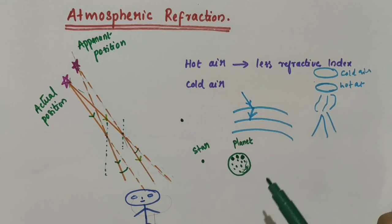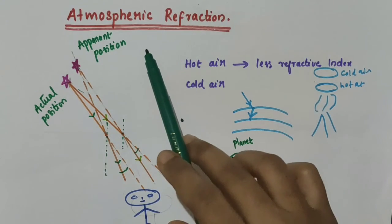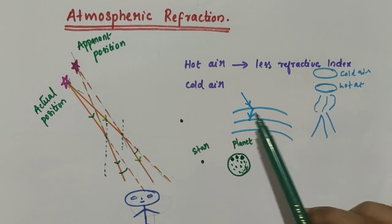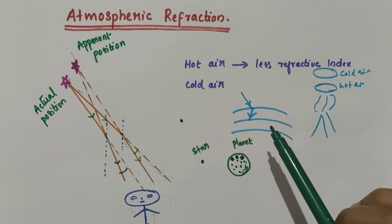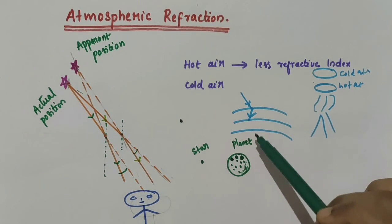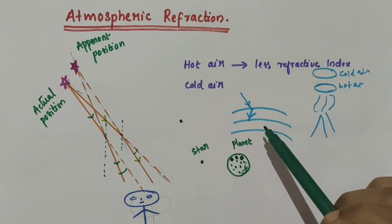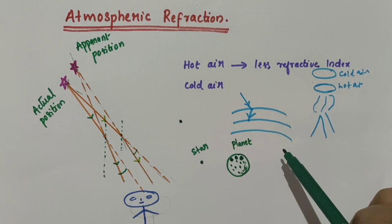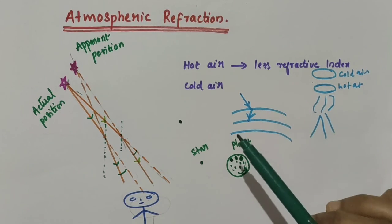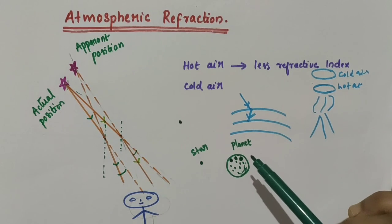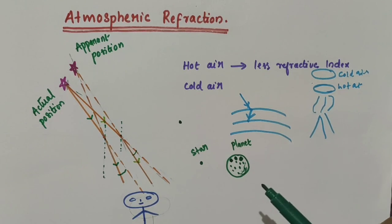In this video, we have discussed about atmospheric refraction — that is, our atmosphere has different layers of air which have different densities and different refractive indices, so when a light ray passes through the atmosphere, refraction takes place. This refraction of light by the earth's atmosphere is called atmospheric refraction. We also discussed why stars twinkle and why planets do not. I hope you understood. Thank you.